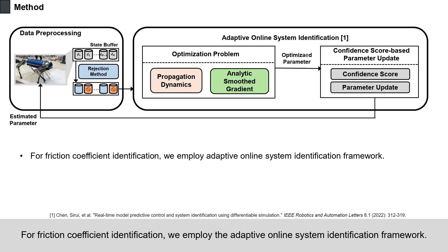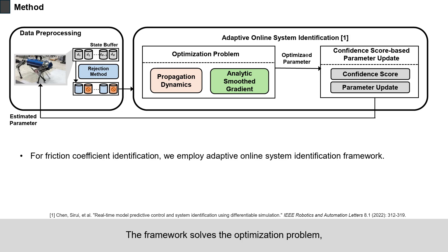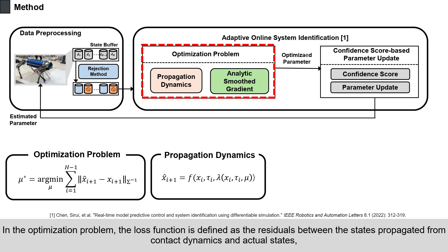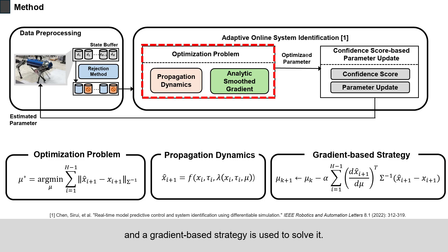For friction coefficient identification, we employ the Adaptive Online System Identification Framework. The framework solves the optimization problem, and then the optimized parameter and confidence score determine the estimated parameter. In the optimization problem, the loss function is defined as the residuals between the states propagated from contact dynamics and actual states, and a gradient-based strategy is used to solve it.